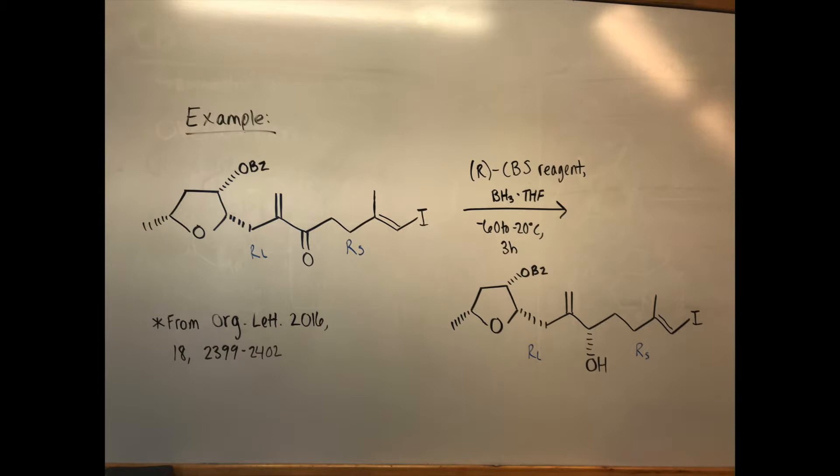If we flip this molecule around a horizontal axis, the alcohol would be facing forward and the small and large groups would still be on the right and left sides, respectively, which corresponds to the overall reaction example that we saw at the beginning. Thank you very much.